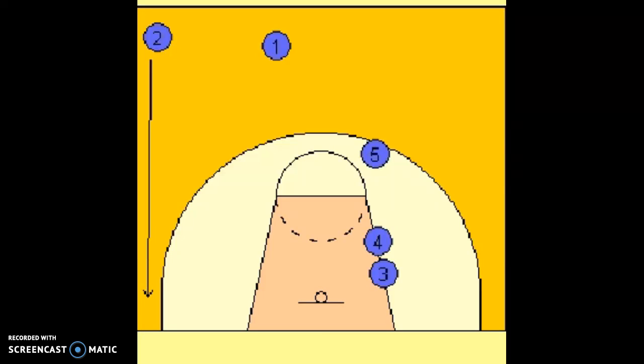This variation is called the three curl four slip. It starts off again very much the same. One bringing the ball up the floor. We've got three and four set up with a double screen just off the block.